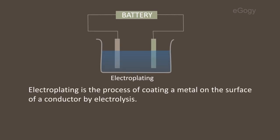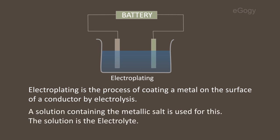Electroplating is a process of coating a metal on the surface of a conductor by electrolysis. A solution containing the metallic salt is used for this. The solution is the electrolyte.